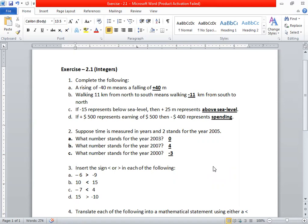Walking 11 kilometers from north to south means walking from south to north in the opposite direction. So in place of plus 11 km, we write minus 11 km.